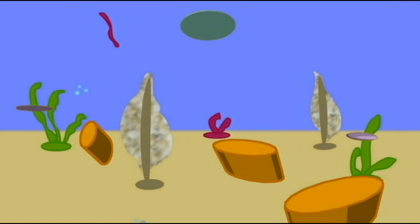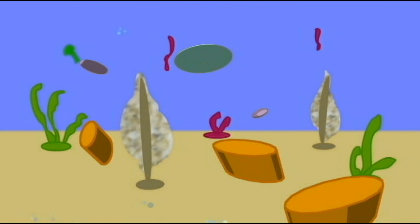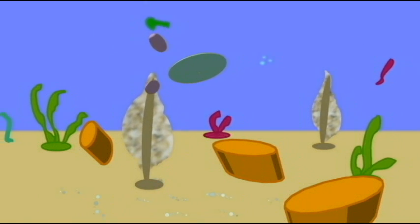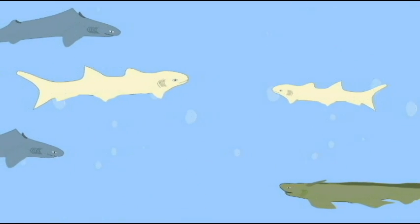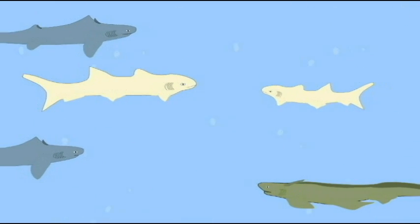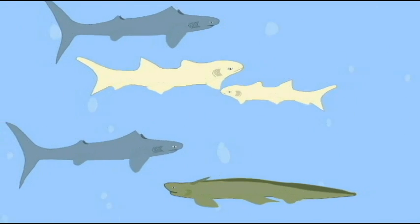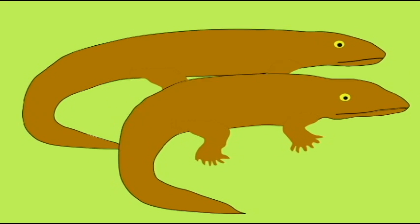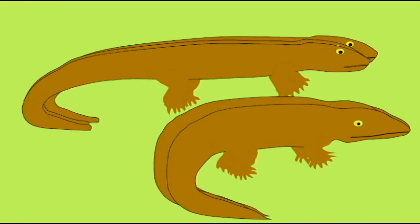Unlike the predictions of the creationist model, not a single amphibian fossil is known from the Precambrian era, which is thought to represent the overwhelming majority of Earth's history. No amphibians are known for the first 200 million years of the Paleozoic era. When amphibians are first found in the fossil record at the end of the Devonian, they are very primitive amphibians which still possess a number of fish-like traits.